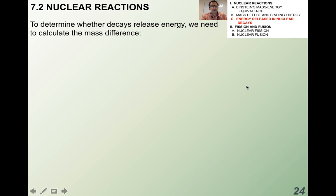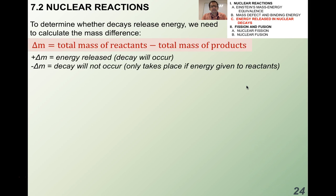To figure out whether a decay releases energy, we calculate the mass difference: delta M equals the total mass of the reactants minus the total mass of the products. If delta M is positive, energy will be released and the decay will occur. If delta M is negative, the decay will not occur.